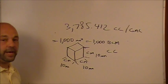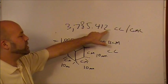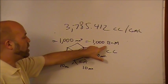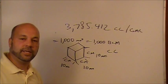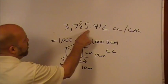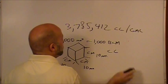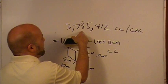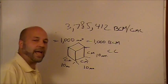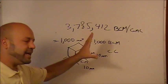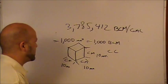That's a very convenient figure. If there are 3,785.412 cc's in a gallon and there are 1,000 BCM in a CC, all we need to do is multiply by a thousand. We just move the decimal three places, so there are 3,785,412 BCM per gallon. That is our base number — we're going to divide by that at the very end to find out how many gallons we've used.